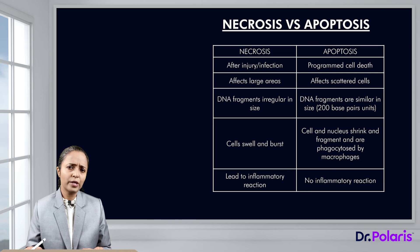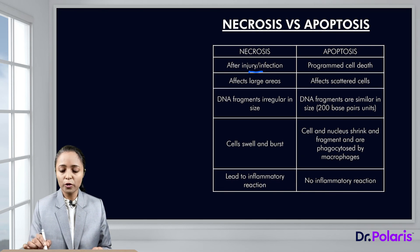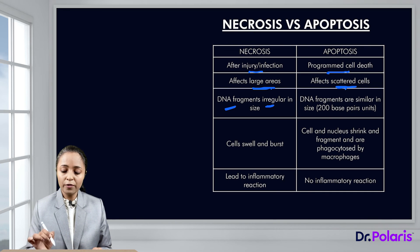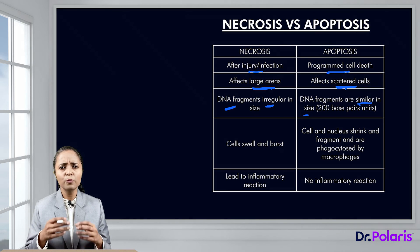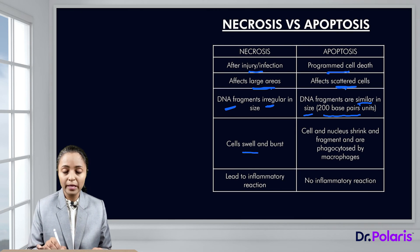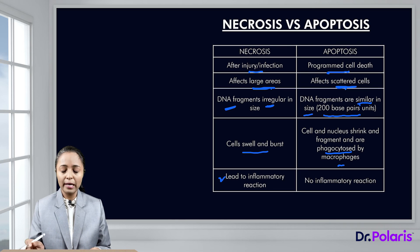Comparing necrosis and apoptosis: necrosis occurs after injury and infection while apoptosis is programmed cell death. Necrosis affects large areas including surrounding cells, while apoptosis affects scattered cells. In necrosis, DNA fragmentation is irregular in size; in apoptosis the fragments are similar in size because enzymes act at particular distances — approximately 200 base pair units. In necrosis, cells swell and burst; in apoptosis, cells and nuclei shrink and apoptotic bodies are phagocytosed by macrophages. In necrosis there is an inflammatory reaction; in apoptosis there is no inflammatory reaction.